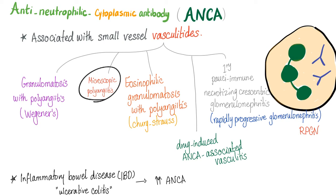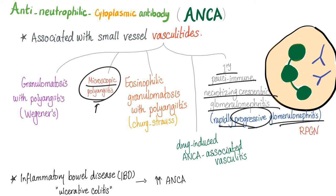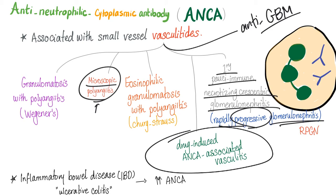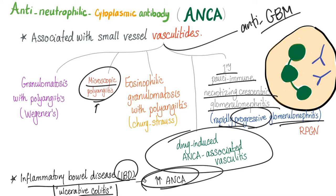Microscopic polyangiitis is written in small letters because they are microscopic — teeny tiny vessels. We also have primary pauci-immune necrotizing crescentic glomerulonephritis, also known as rapidly progressive glomerulonephritis. Additionally, you can have anti-glomerular basement membrane antibodies, drug-induced ANCA-associated vasculitis, and inflammatory bowel disease-associated vasculitis, especially ulcerative colitis. All of these can have increased levels of ANCA in the serum.